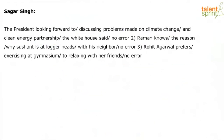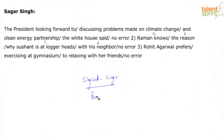Question two: Raman knows the reason why Shishant is at loggerheads with his neighbor. So Raman knows is part A, the reason is part B, why Shishant is at loggerheads is part C, and with his neighbor is part D. Let's go part by part. Raman knows — Raman, singular subject, singular verb knows. Subject-verb agreement is fine. Part A is okay.